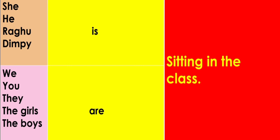Next is 'is'. With he, she, and any name, but it should be singular. With that we always use is. With he, with she, and with singular naming words we always use is. He, she, or singular naming words ke saath. Like, he is sitting in the class. She is sitting in the class. And any name, Raghu is sitting in the class.